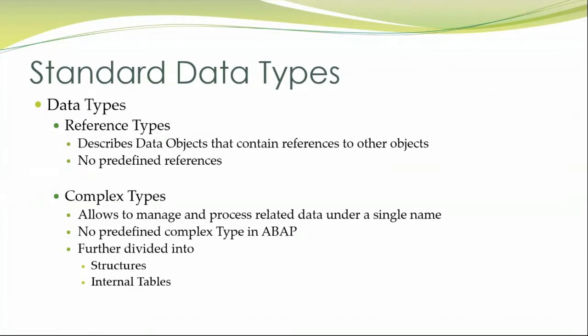What are the standard data types that are available? We have two types of standard data types: reference type and complex types. Reference type describes data objects that contain references to other objects. Complex types are types that allow you to manage and process related data under a single name.